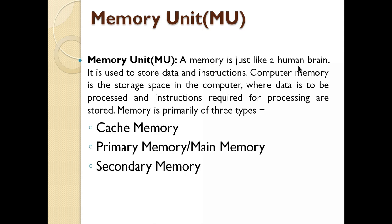Now, Memory Unit. Memory unit is just like our human brain — just as we keep things remembered in our brain and use them when needed, in the same way the data, instructions, or programs we give to the computer, or whatever processing is done, is stored in the memory unit. Whenever required, it is provided to us. There are three types of memory: cache memory, primary memory, and secondary memory.